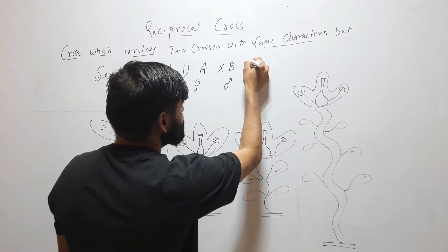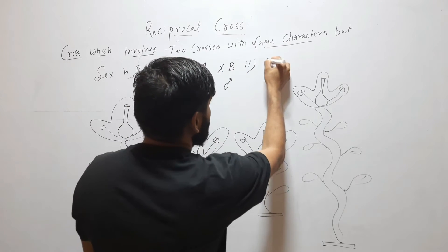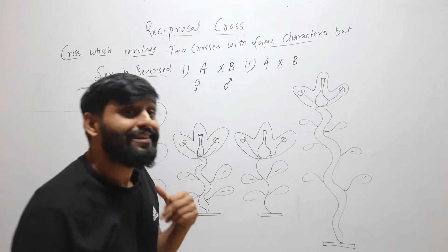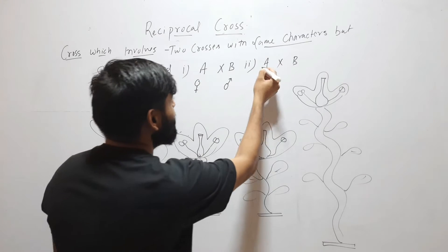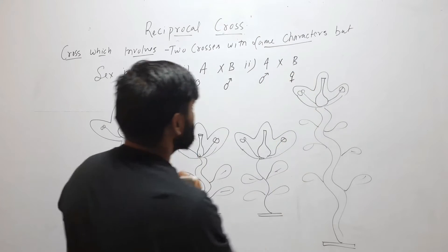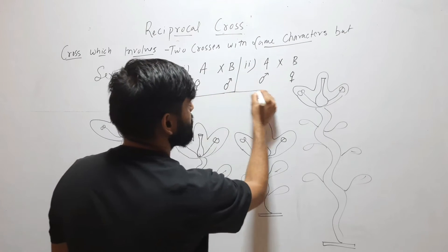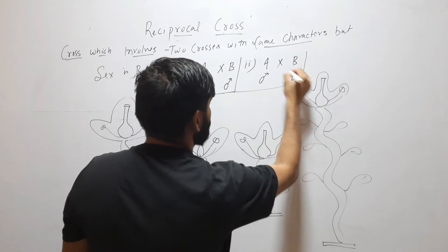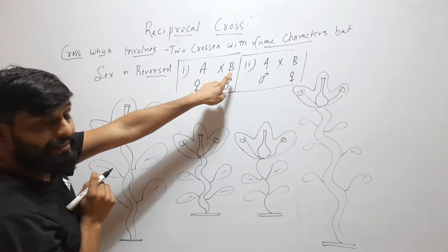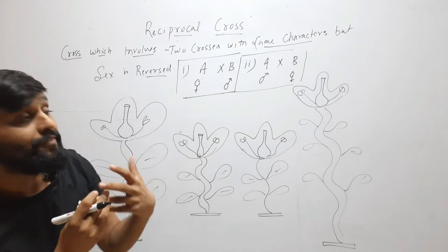And in the second cross, I will take the same characters, that is A and B, but I will reverse their sexes. There, A will be male and B will be female. So here you can see that we have two crosses with the same characters — A and B — but their sexes are reversed.